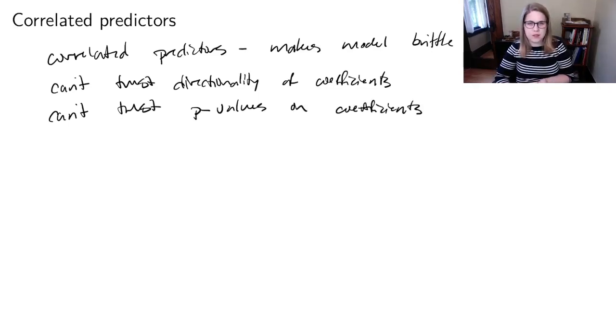So those are obviously things that we care a lot about. We're usually at least thinking about is this coefficient positive or negative? Is it a positive relationship with the response variable, or is it a negative response? And we also really care about p-values. So the fact that we have these kind of untrustworthy models when we have correlated predictors means that we want to try to avoid that at all costs.